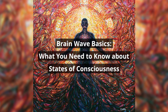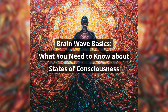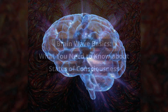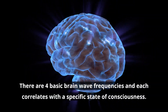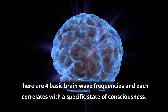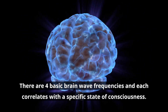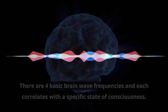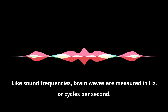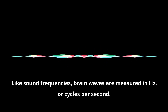Brainwave Basics: What You Need to Know About States of Consciousness. There are four basic brainwave frequencies, and each correlates with a specific state of consciousness. Like sound frequencies, brainwaves are measured in hertz, or cycles per second.